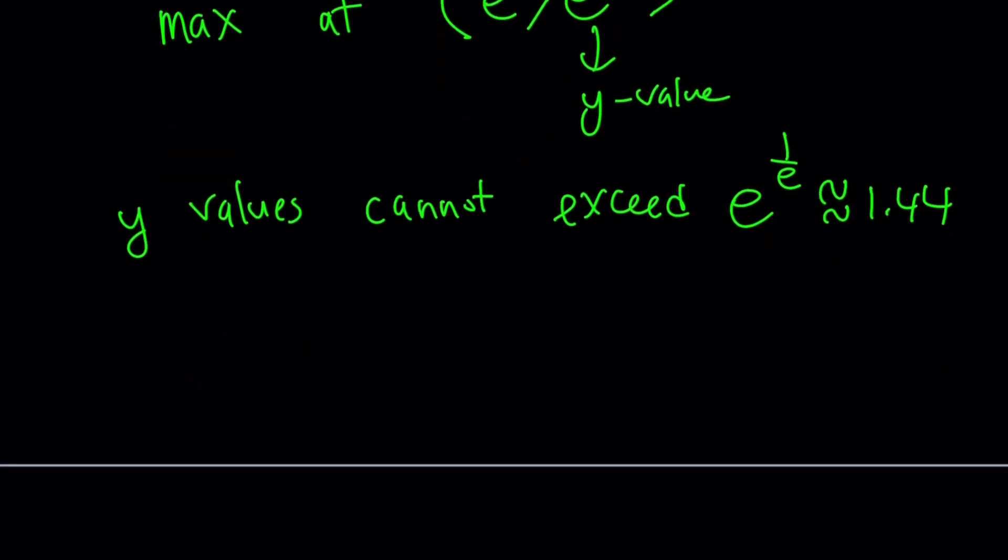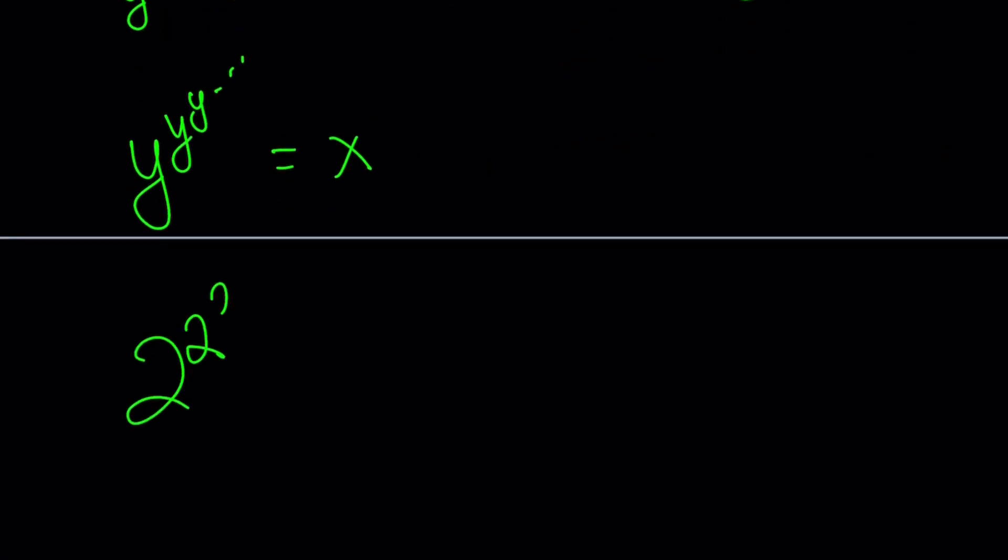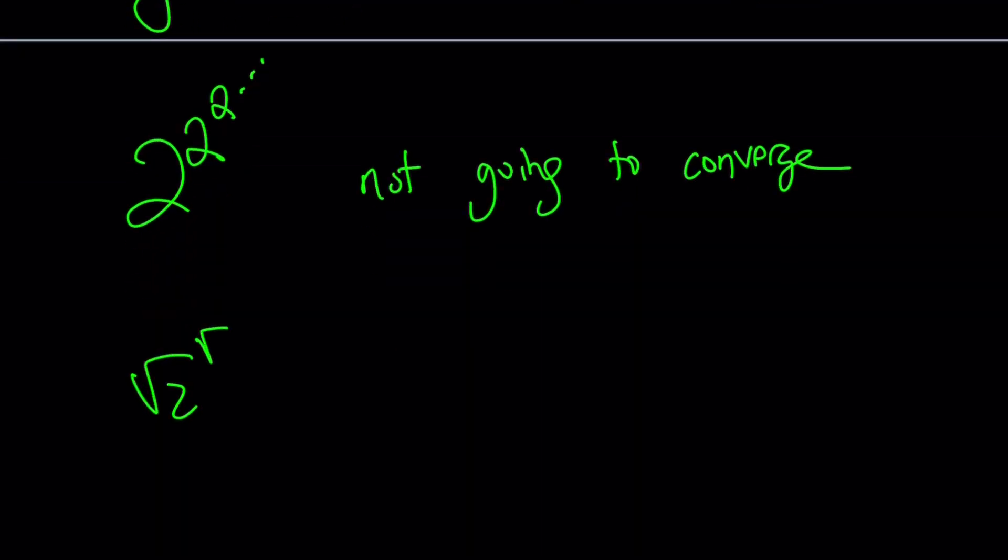In other words, y values cannot exceed e to the power 1 over e, which is approximately 1.44. So for example, our original expression was like y to the power y to the power dot dot dot, and it's equal to x. And we don't want y to exceed e to the power 1 over e. For example, what happens if y is equal to 2? 2 to the power 2 to the power 2 dot dot dot. But 2 is obviously greater than 1.44. This is not going to converge because it's going to exceed the allowable maximum value. But if you have square root of 2 to the power square root of 2, and then square root of 2, this converges because square root of 2 is less than 1.44, or to be more exact, this number is less than e to the power 1 over e. Therefore, this is going to converge.